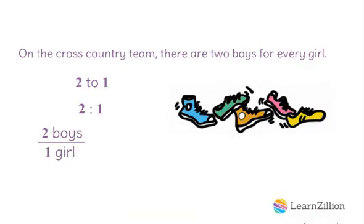We can also write the inverse of this relationship and compare girls to boys. We can say that there is one girl for every two boys, or as a fraction, one half. These fractions are not equivalent. However, we can use either of them depending on how we're talking about this situation.